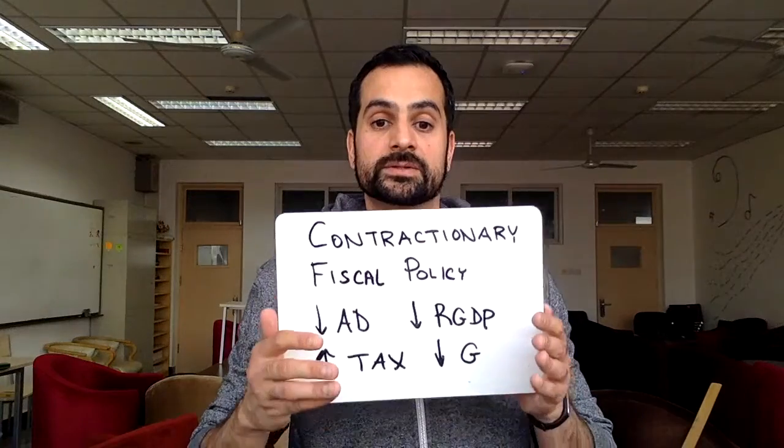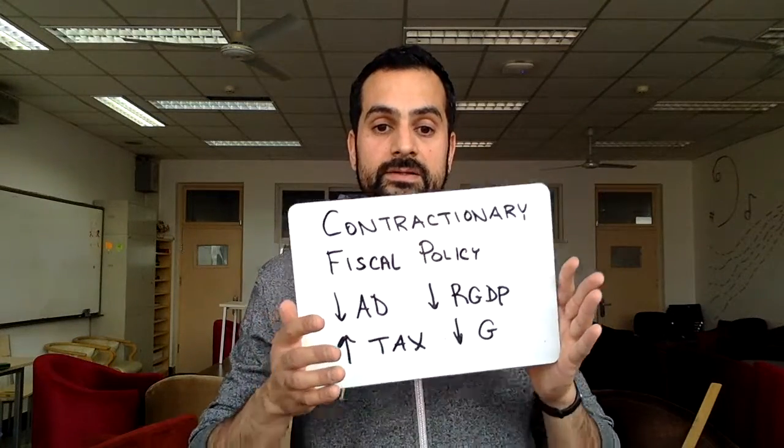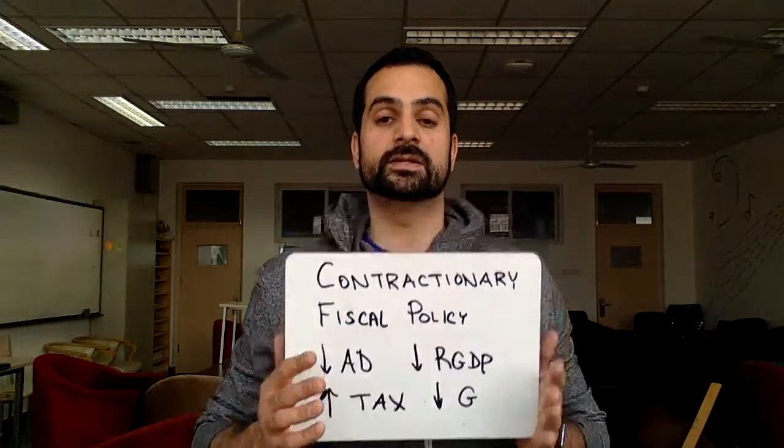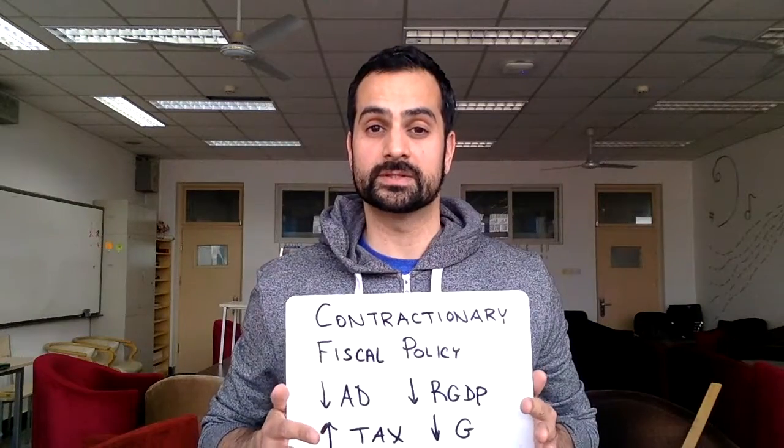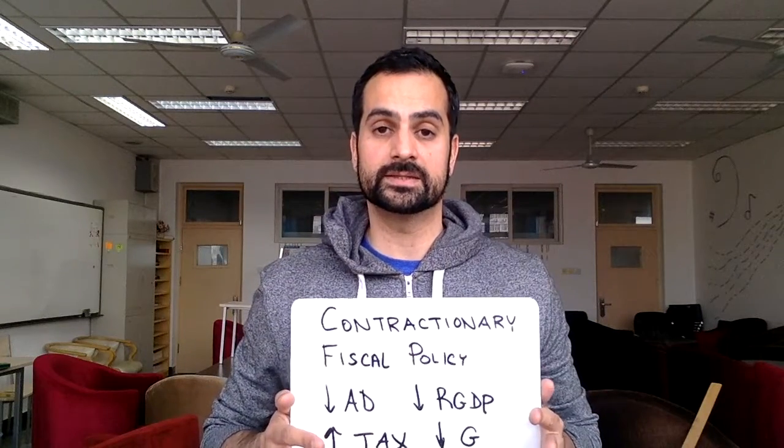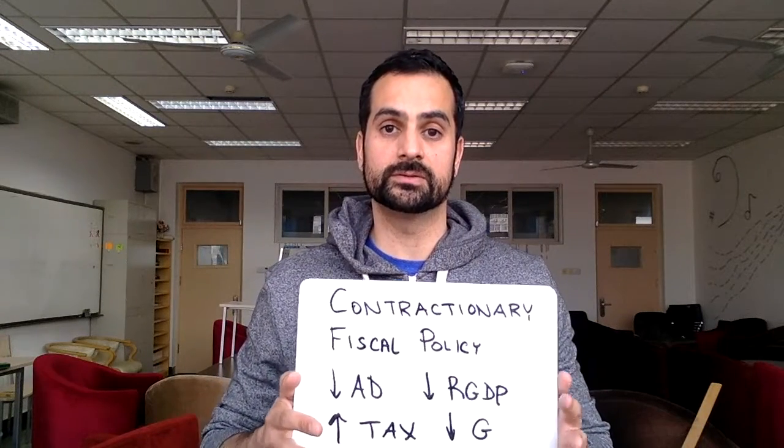The other side to that is contractionary fiscal policy. This is when the government is potentially trying to slow down economic growth or curb inflation. The way they would do that is by either increasing tax or reducing government spending in an attempt to curb the growth of the economy.